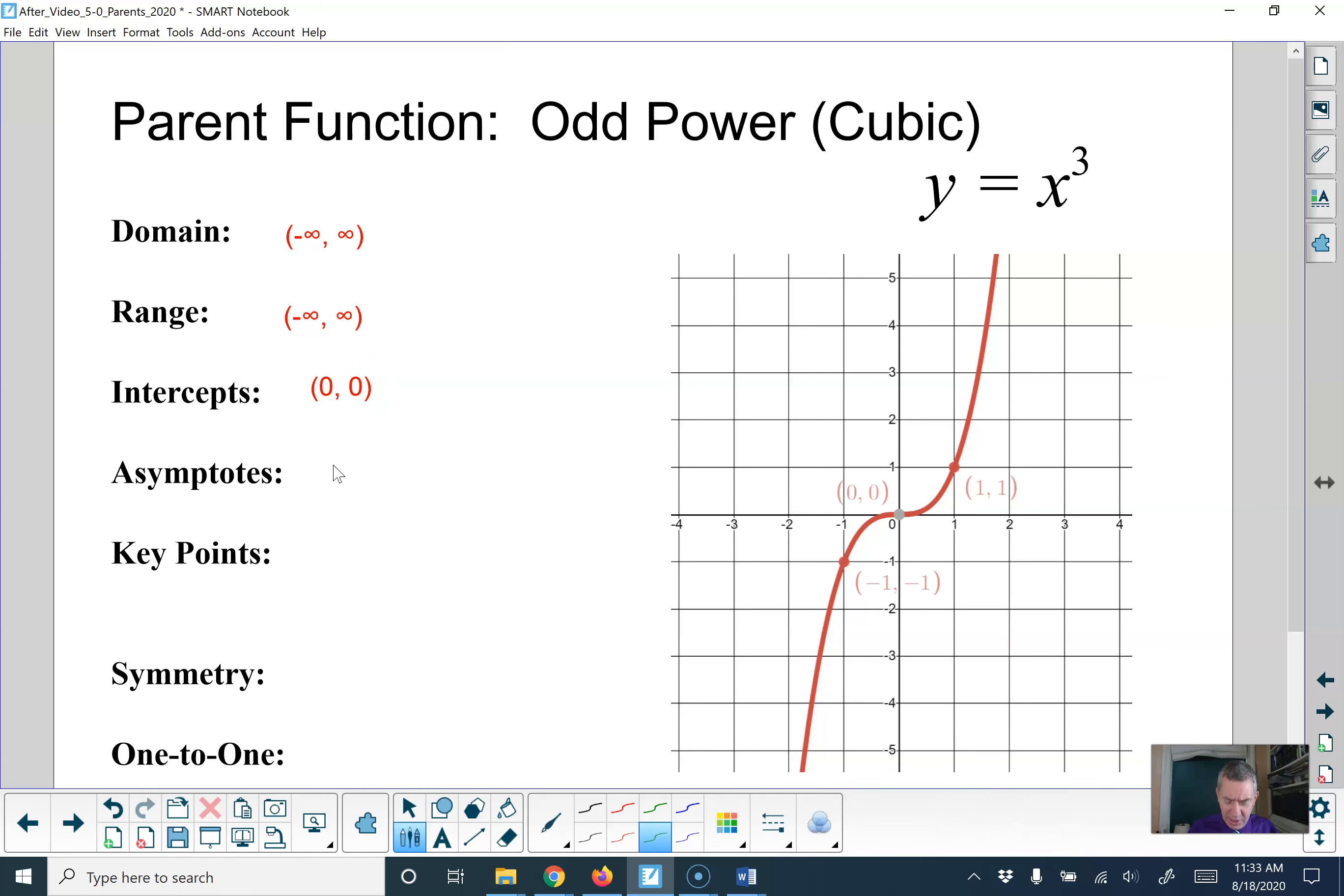You notice that there are no asymptotes. You notice that the key points are the same as on your line, which is curious enough, that's the same as y equals x to the first. So your key points, negative 1, negative 1, 0, 0, and 1, 1 are all nice on the graph.